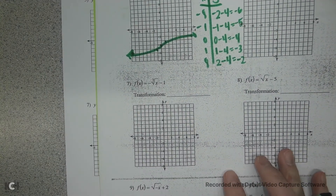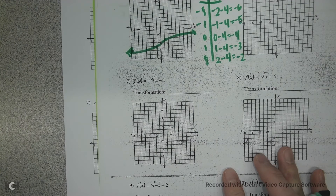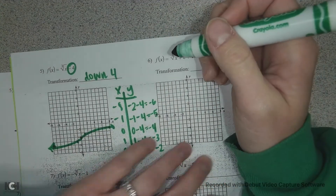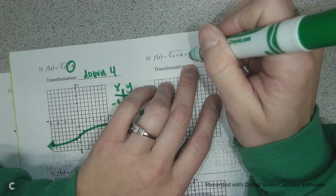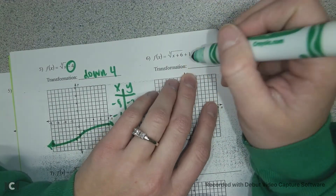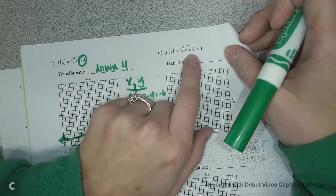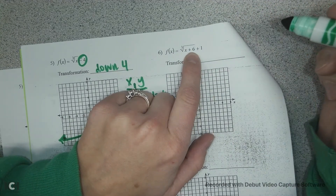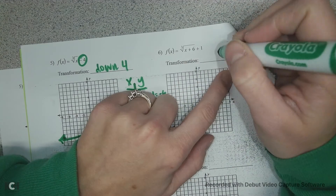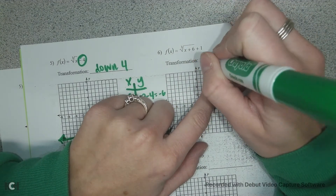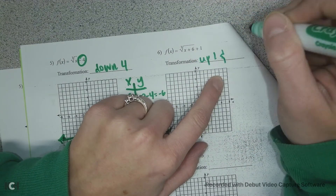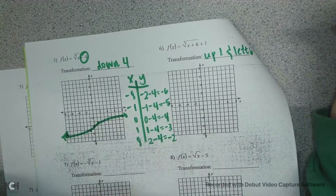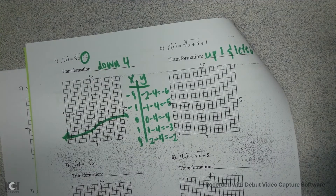On number 6, we're going to shift up 1 because there's an adding 1 at the end, and then also move left 6 because it's a positive 6 inside the radical. So on number 6 you should have a transformation of up 1 and left 6. You can graph that one and see.